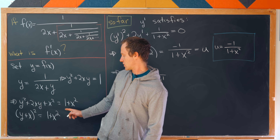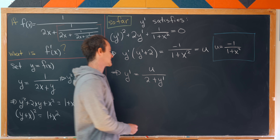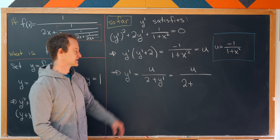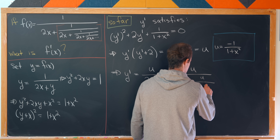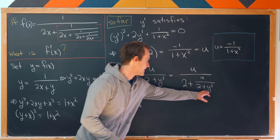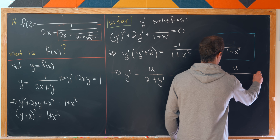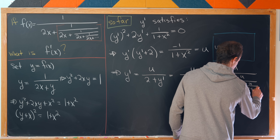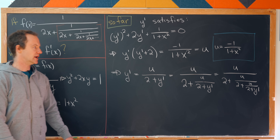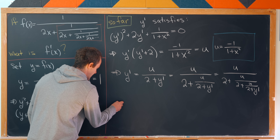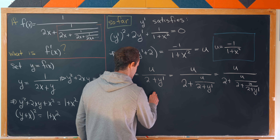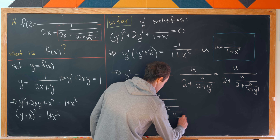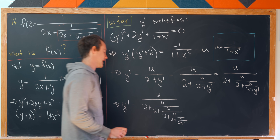That gives us something similar to what we had for y. Expanding by substituting this expression for y' into itself repeatedly builds a continued fraction: y' = u over 2 plus u over 2 plus u over 2 plus u over 2 plus ⋯, where u = −1/(1+x²).